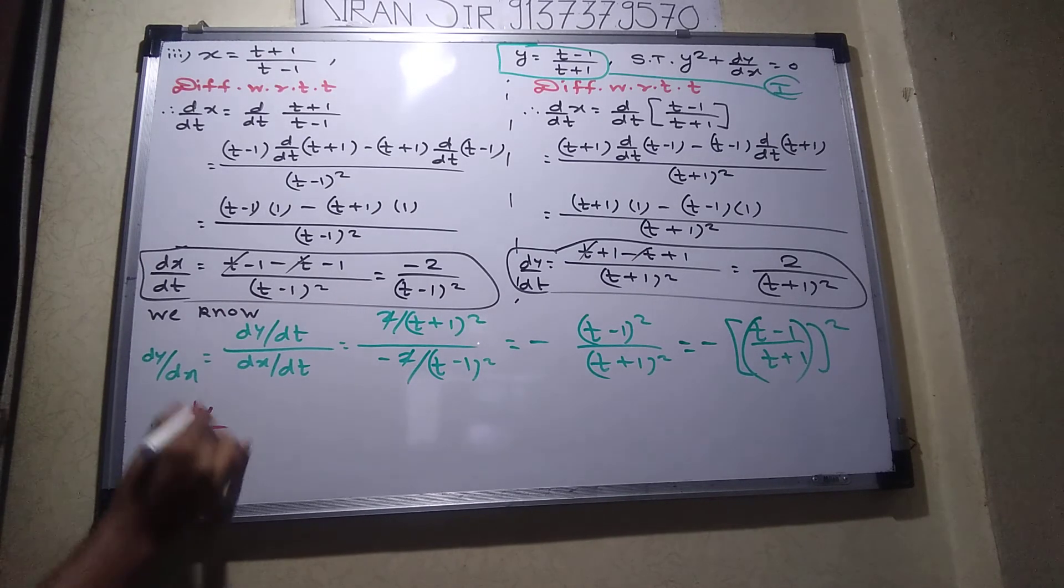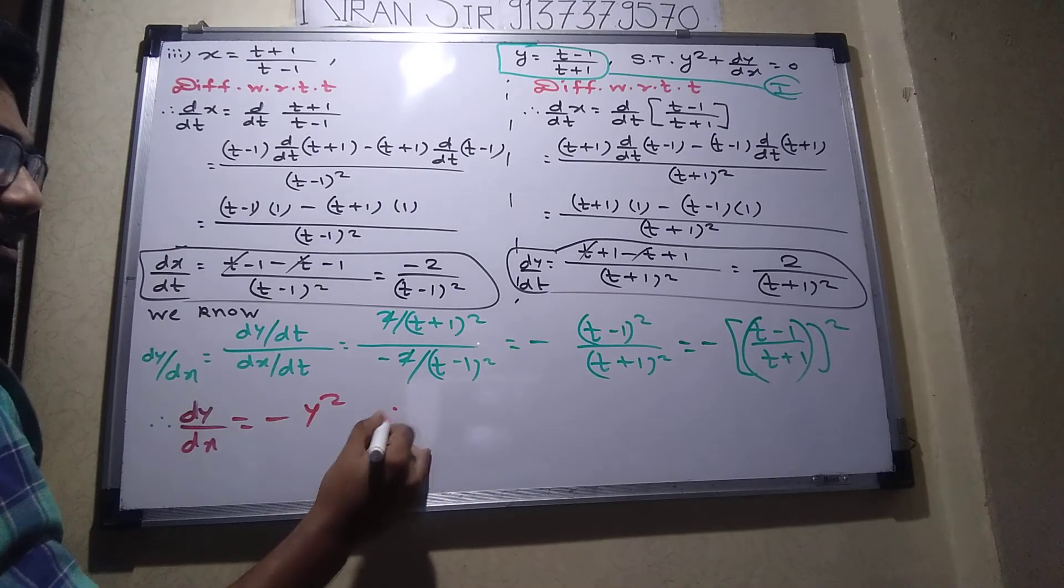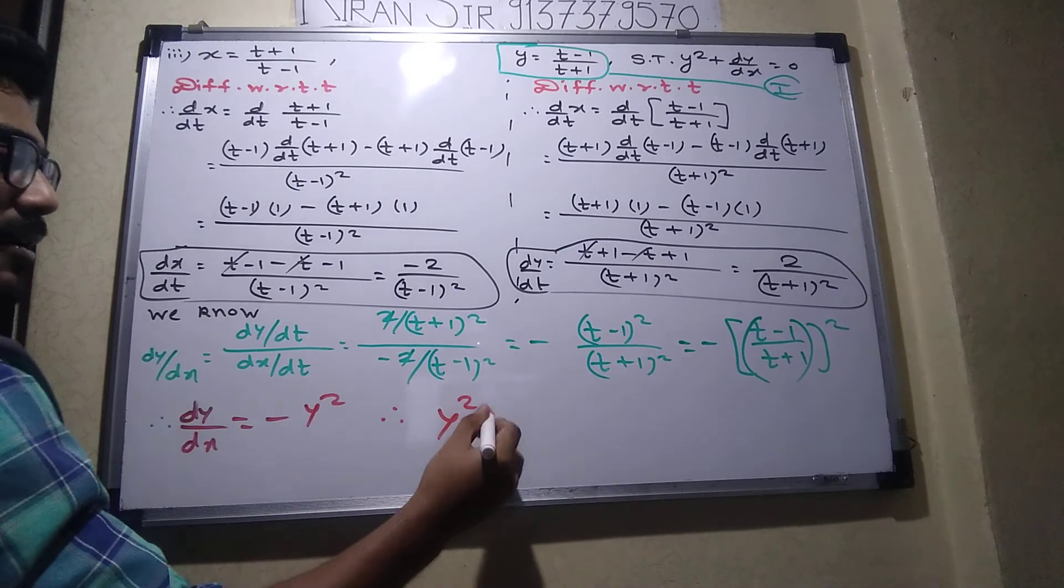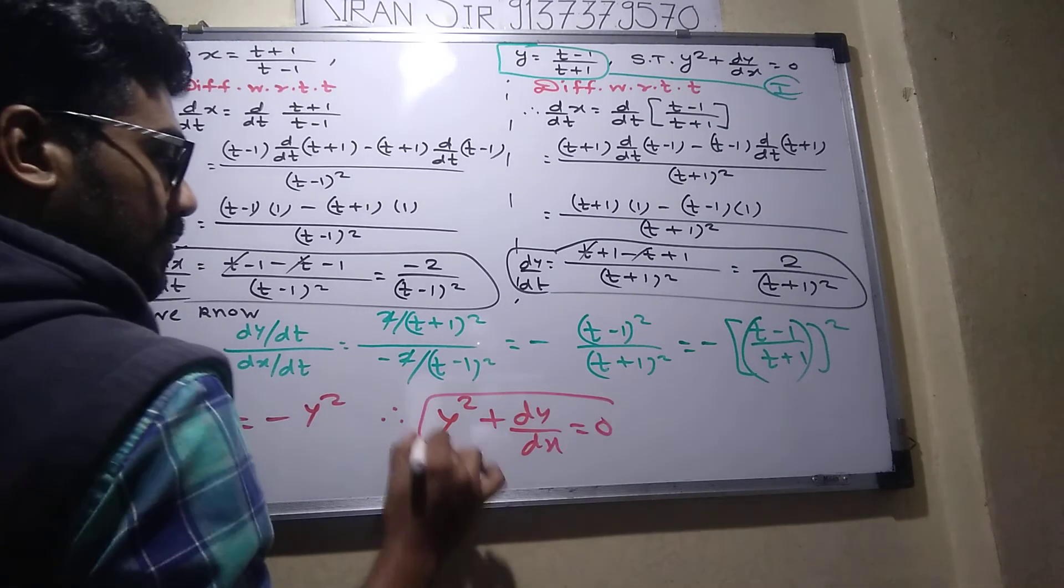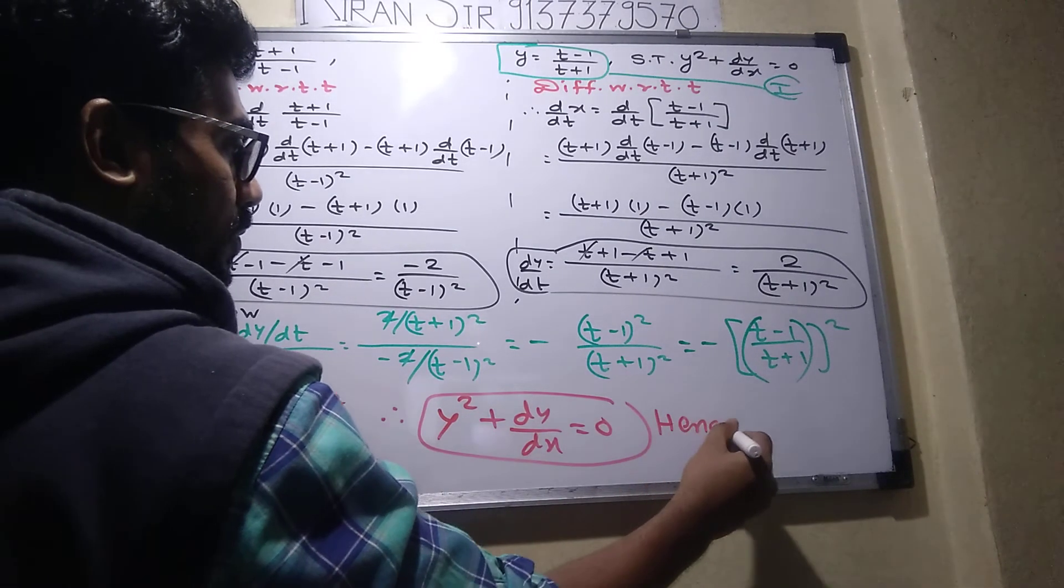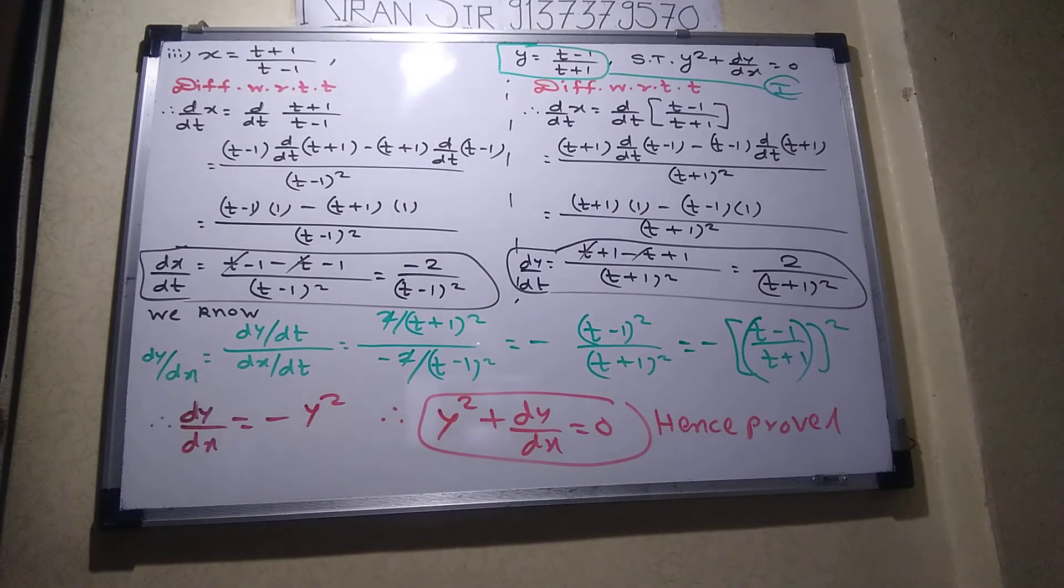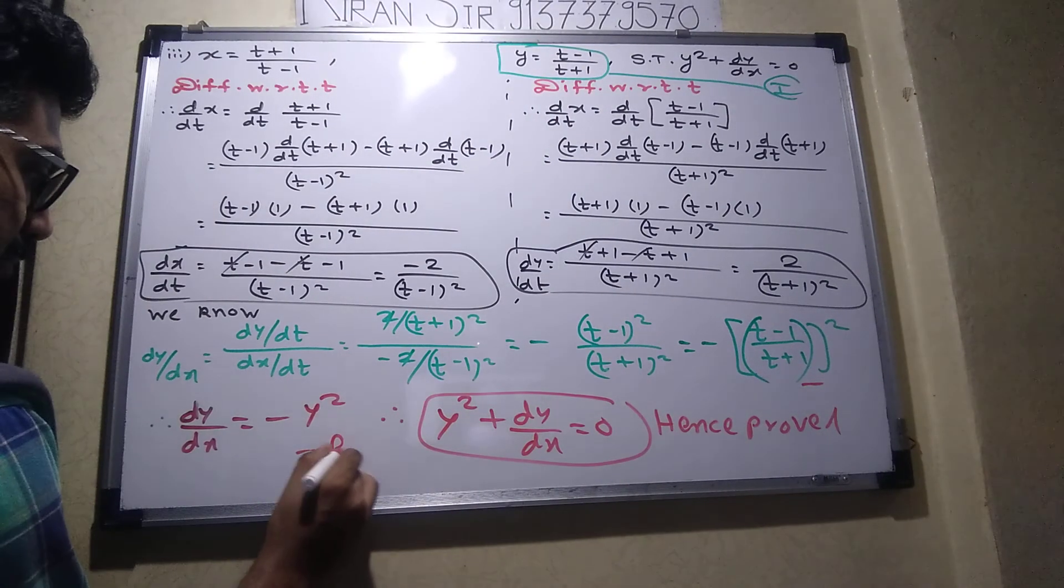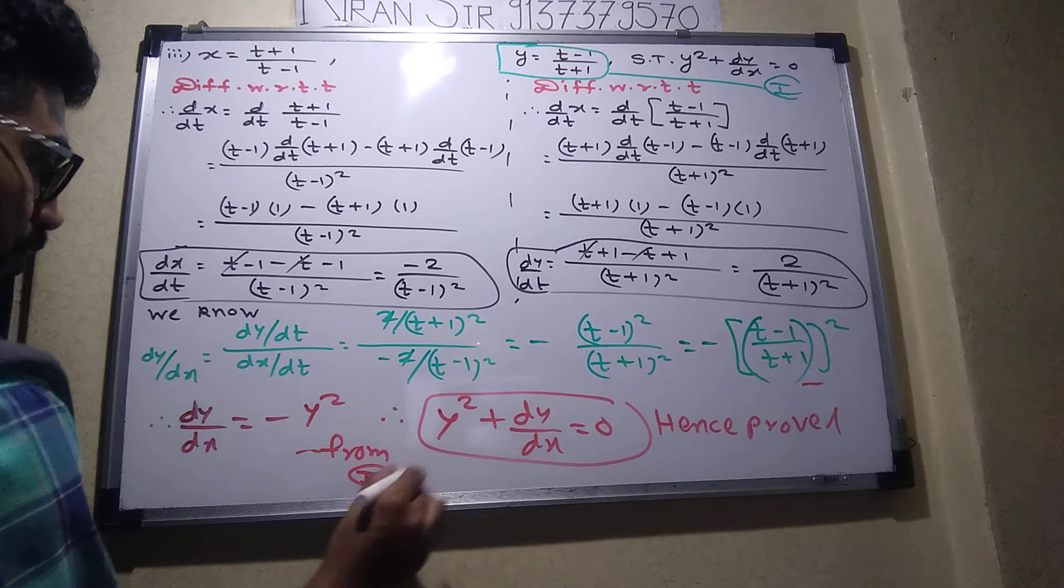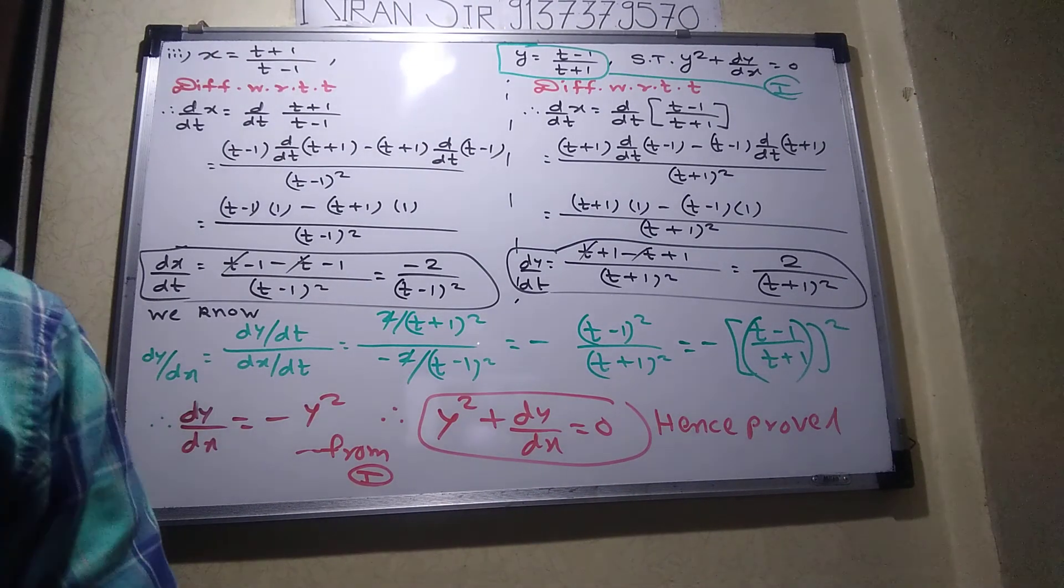y. So dy by dx equals to minus and the other term is y, y square. So minus y square or plus y square. Everyone understood? Say yes or no. You say here from one. Is it clear? Say yes or no?